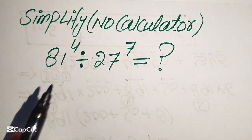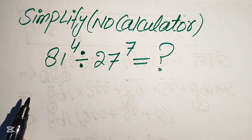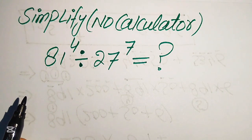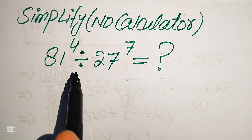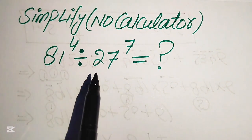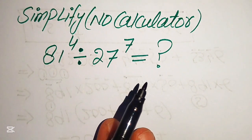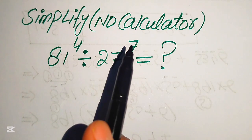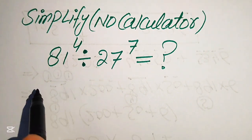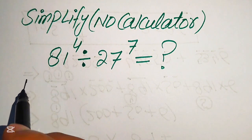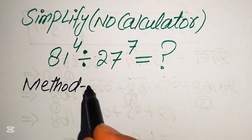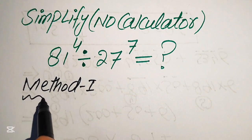Hello everyone, today I want to show you how to simplify this algebraic expression without using a calculator. If we have 81 to the power of 4 divided by 27 to the power of 7, we write this into simplified form. Because the calculator is not allowed, we need to show all of the working on paper. I will solve this problem using two methods, and I hope you like both of them.